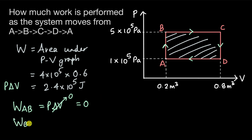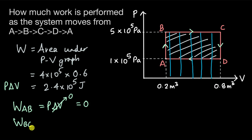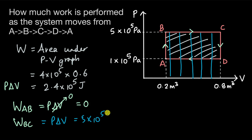If we think about process BC — the work done is always the area under the curve, which is this entire area under the line BC. We use P·ΔV: P is 5×10⁵ pascals and ΔV is 0.8 minus 0.2, so 0.6 m³. This comes out to be equal to 3×10⁵ joules.